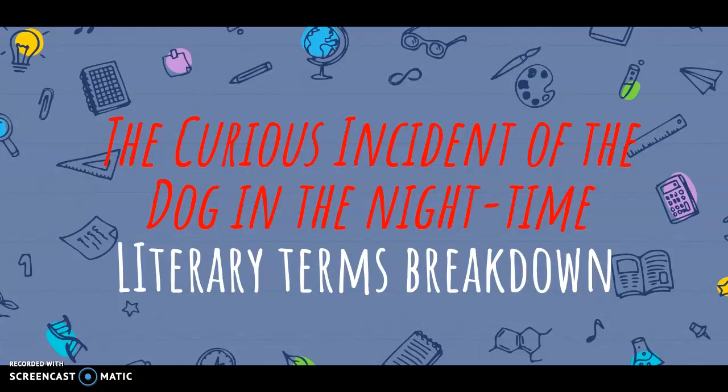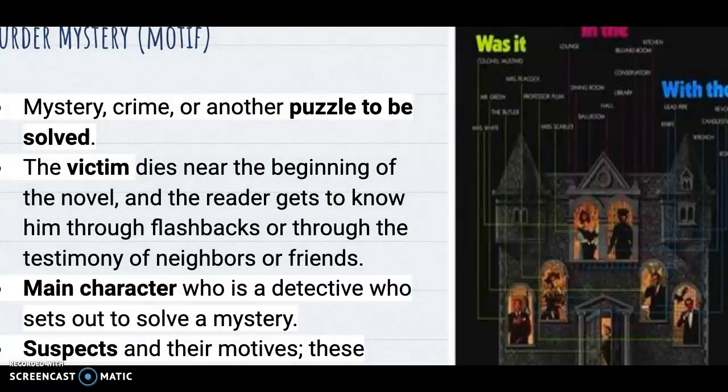Hello, this is an explanation of the literary terms found in the book you're going to be reading called The Curious Incident of the Dog in the Night Time. This story uses the motif, or a general framework, of a murder mystery. The parts of a murder mystery that you need to be aware of — a lot of these you can probably figure out on your own — is that it's a puzzle to be solved, a mystery of crime that needs to be solved.